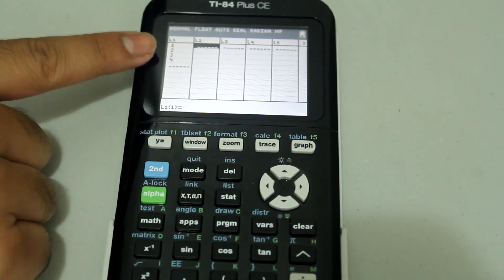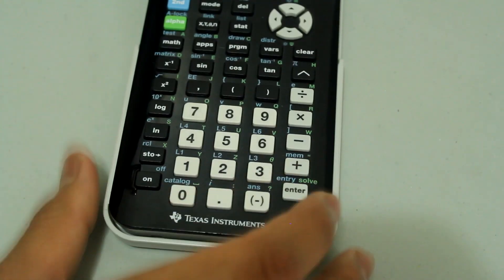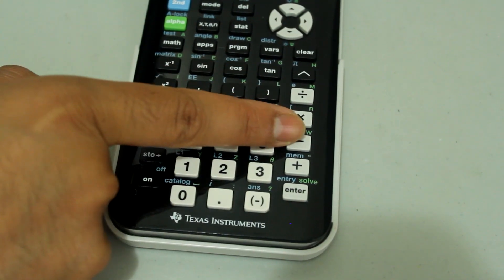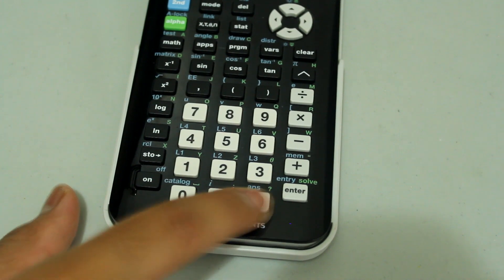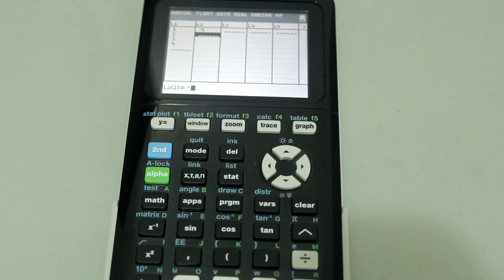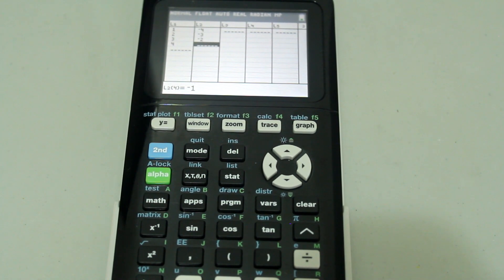Now arrow right and here I'm going to type in the negative values and when you're typing in negative numbers, always use this negative sign and not the regular minus sign. So negative 4, negative 3, negative 2, and negative 1.